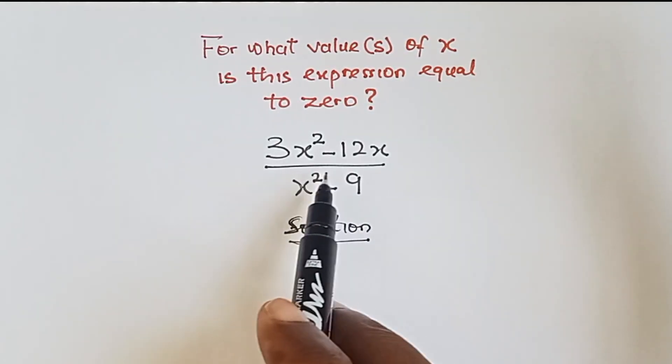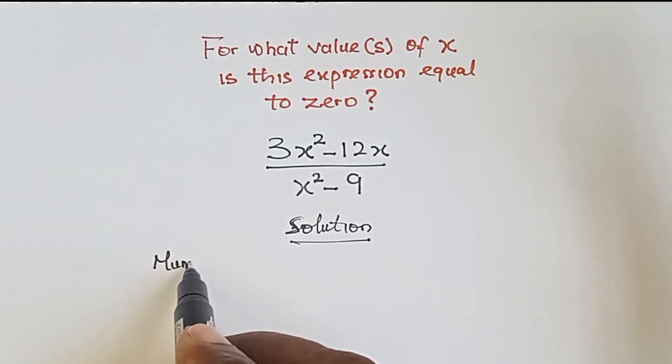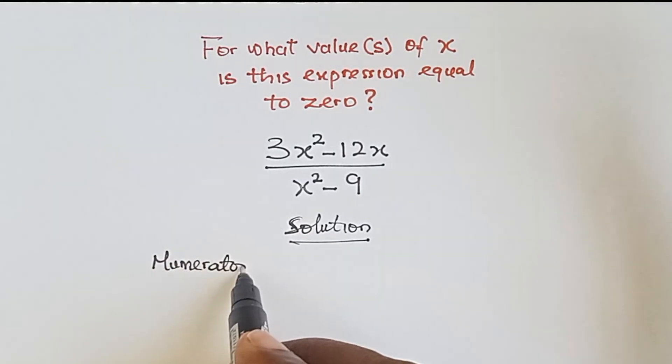Right, solution. For this expression to be equals to zero, it means that the numerator must be equals to zero.